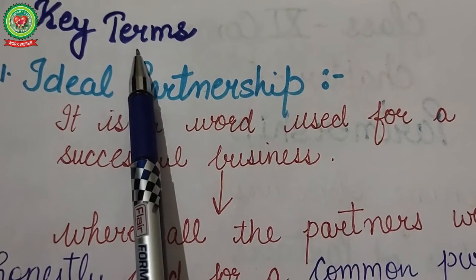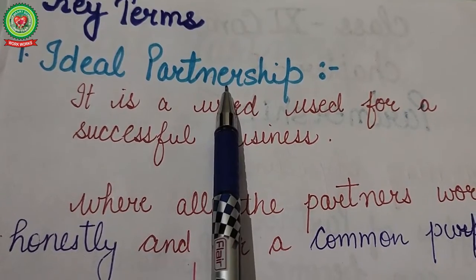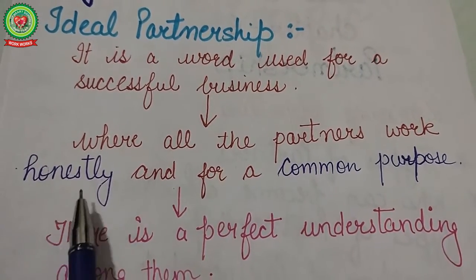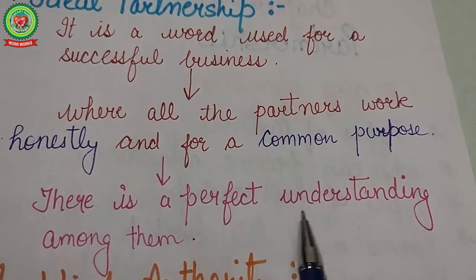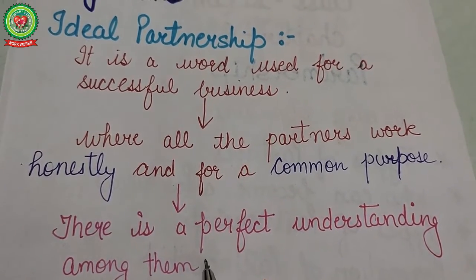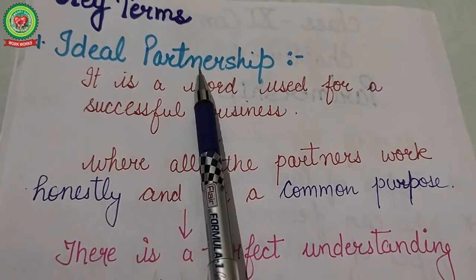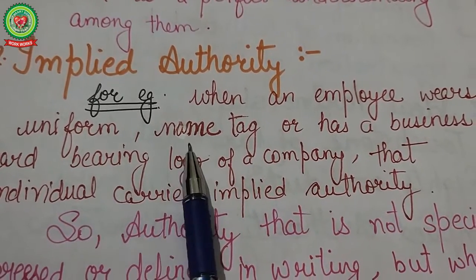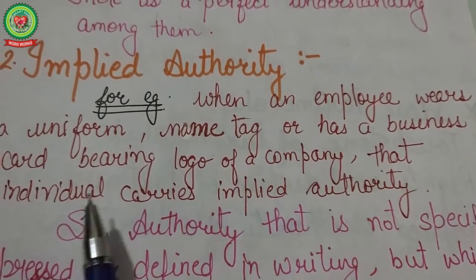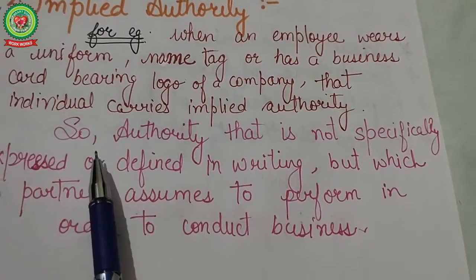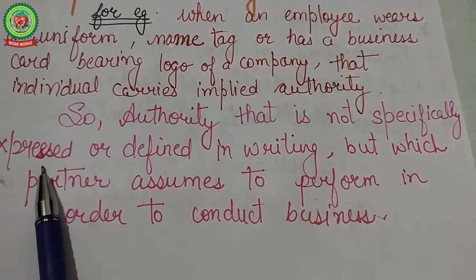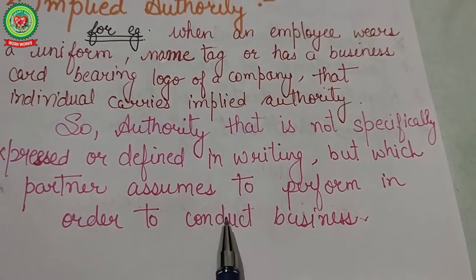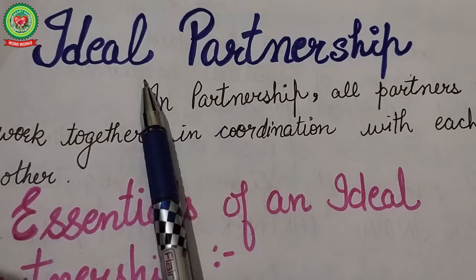First, let's discuss our key terms. Ideal partnership is a word used for a successful business where all the partners work honestly and for a common purpose, and there is a perfect understanding among those partners included in the partnership firm. Implied authority refers to authority that is not specifically expressed or defined in writing but which a partner assumes to perform in order to conduct business.